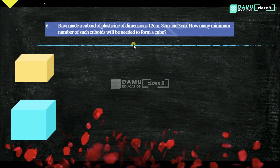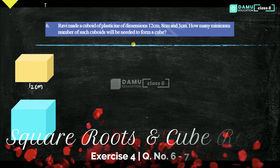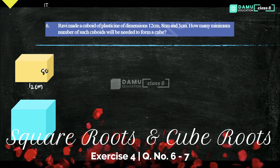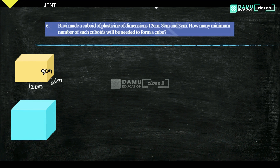So in this module, we are going to discuss: Ravi made a cuboid of plasticine of dimensions 12 cm, 8 cm height, and breadth 3 cm. How many minimum number of such cuboids will be needed to form a cube?